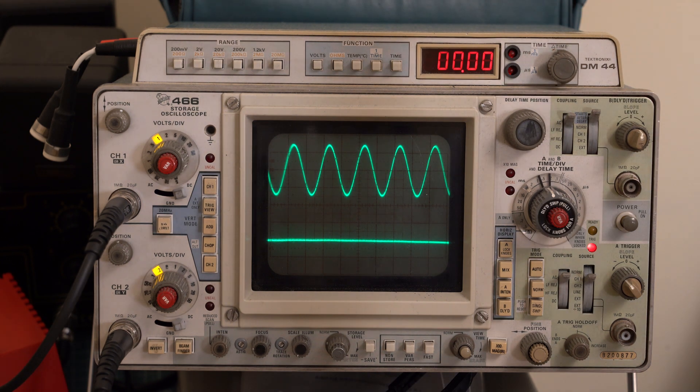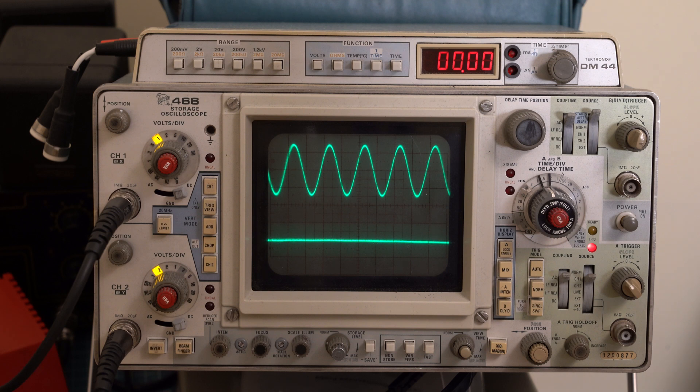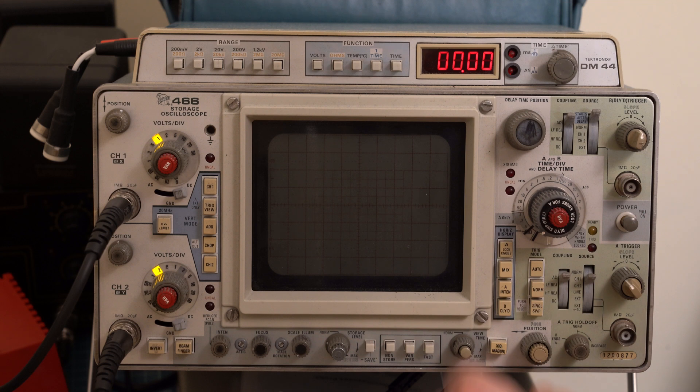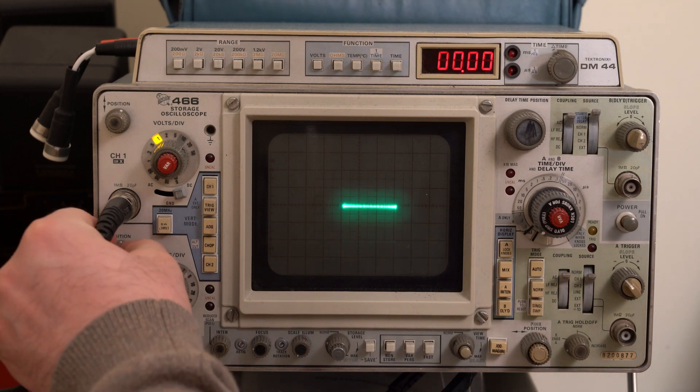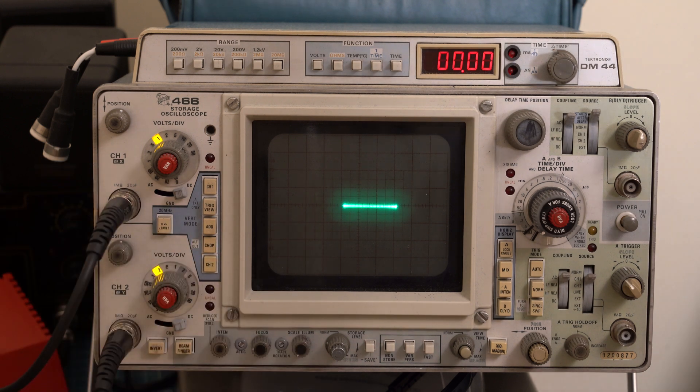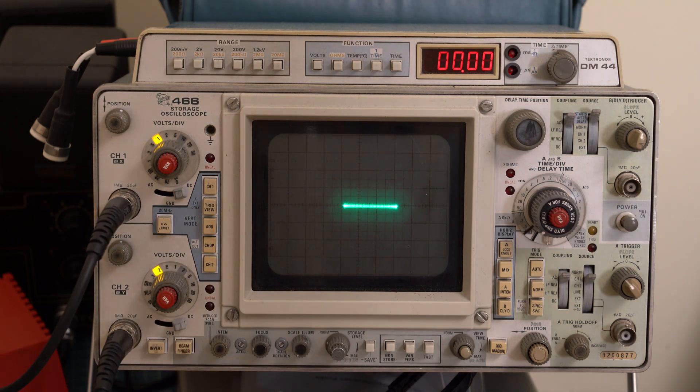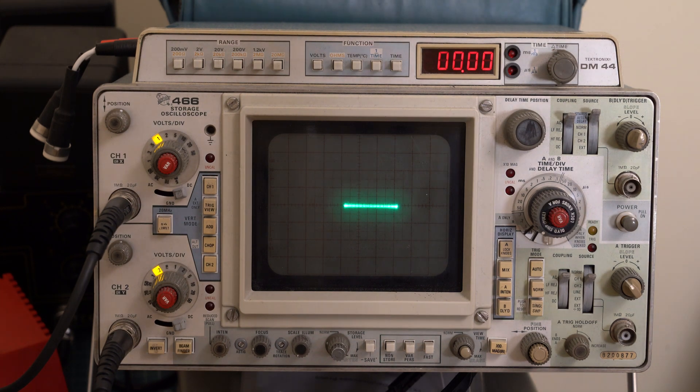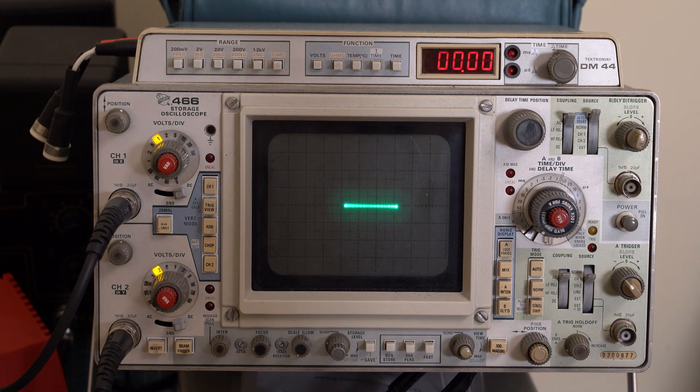Now the next technique is not a time domain one, but rather a transfer characteristic technique. And to do this, we have to reconfigure the oscilloscope just a bit. First of all, we need to put it in XY mode. And now we get something else here. At first, we get a straight line. So at this point, instead of looking at the time domain analysis, we are looking at the output with respect to the input, meaning that this is a transfer characteristic. Now let's slowly crank up the volume and see what happens.